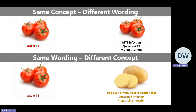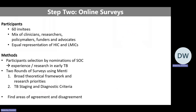The second step was a Delphi online survey process. We invited 60 individuals — a mix of clinicians, researchers, policymakers, and advocates — balanced across high-income and low- and middle-income countries, and by gender. This group was recommended by the Scientific Organizing Committee. We did two rounds of surveys using Menti. In the first round, we focused on the broad theoretical framework and research priorities. In the second round, we worked intensively on TB staging and diagnostic criteria. The goal was to identify areas of agreement and disagreement.